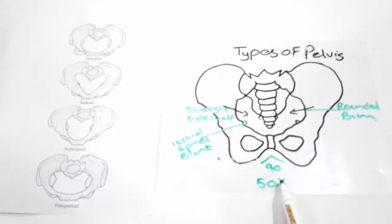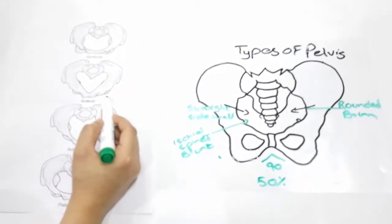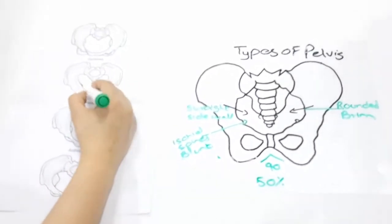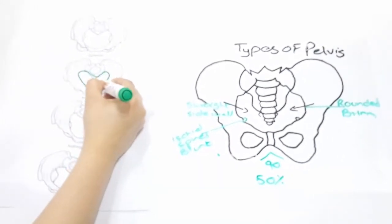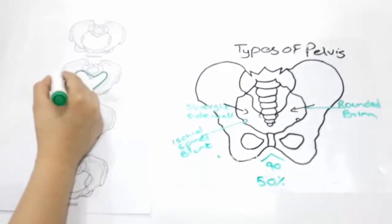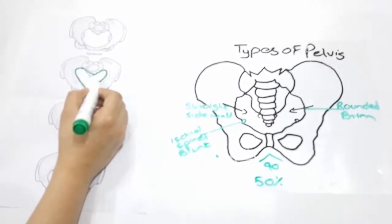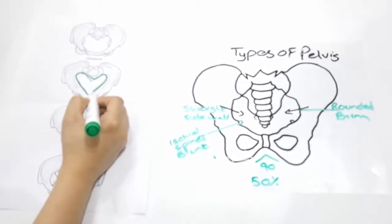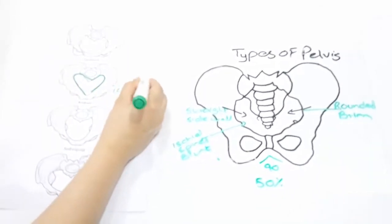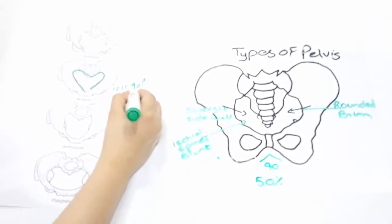Android pelvis: The android pelvis has a heart-shaped brim. It has a narrow fore pelvis, the sidewalls are convergent, ischial spines are prominent, the sciatic notch is narrow, and the sub-pubic angle is less than 90 degrees. It has an incidence rate of 20%.